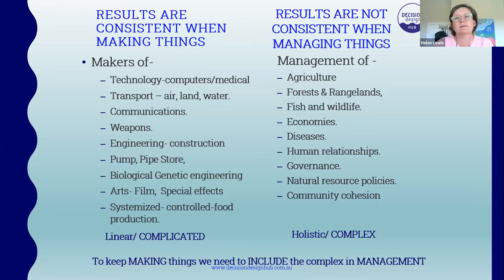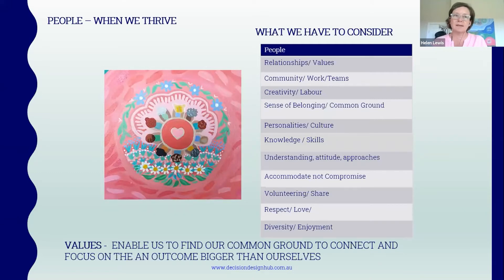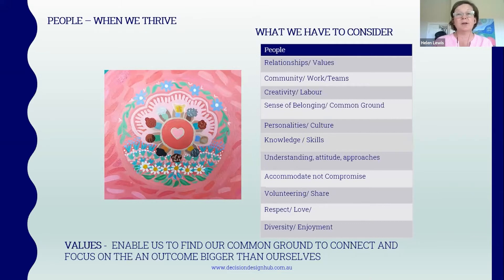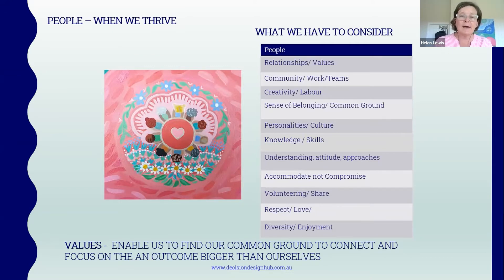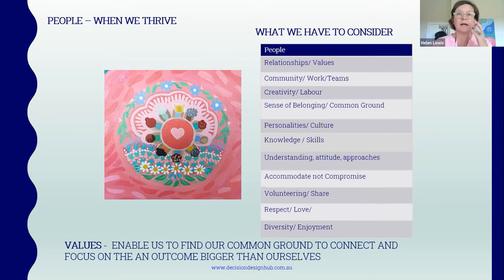To think about managing complexity with people, we consider what people need when they thrive: relationships and values, community and work teams, creativity and labor, a sense of belonging, common ground, personalities and culture, knowledge, skills, understanding, attitude, accommodating rather than compromise, volunteering and sharing, respect, love, diversity, and enjoyment. The critical key point is values — it's the one thing that brings us together and provides common ground to connect and focus on an outcome bigger than ourselves.